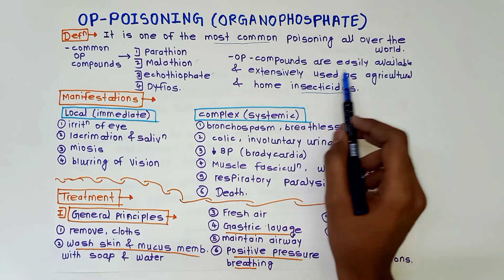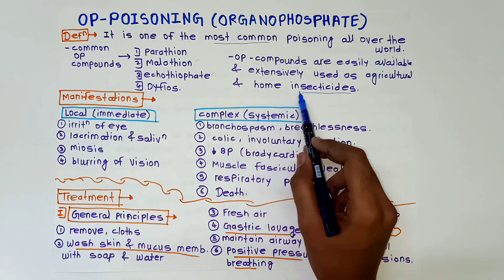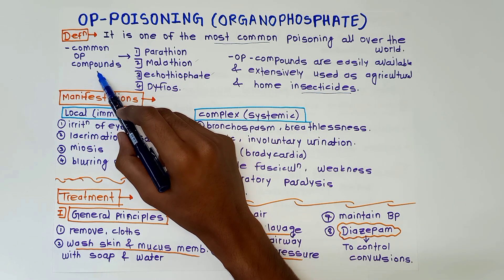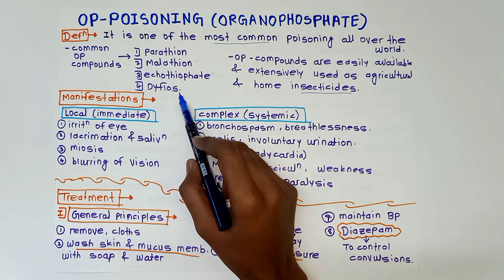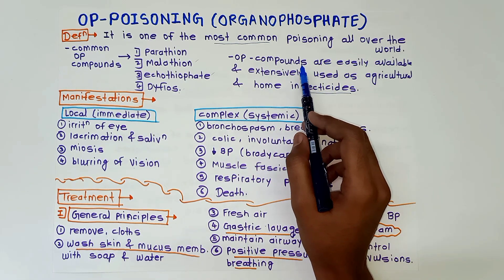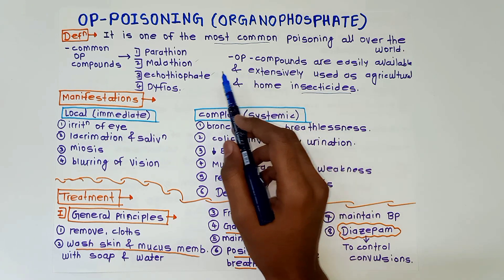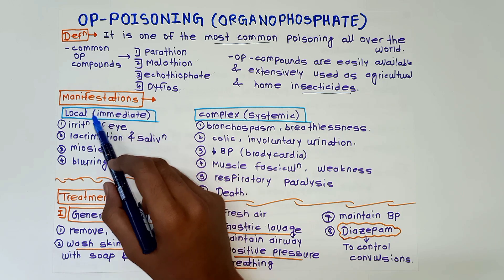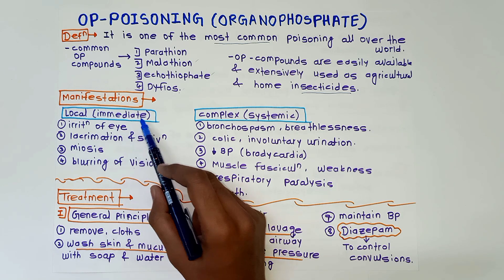Organophosphate compounds are easily available and extensively used as agricultural and home insecticides. Common organophosphate compounds are parathion, malathion, echothiophate, and diphthose. In cases of organophosphate compound poisoning, homicidal and suicidal cases are very common.